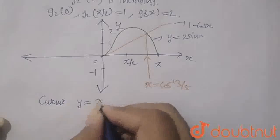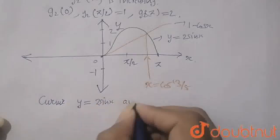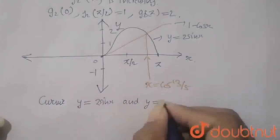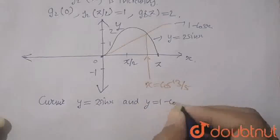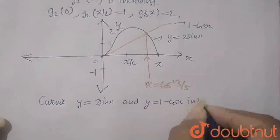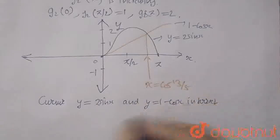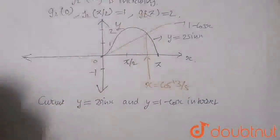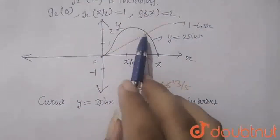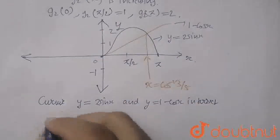The curves y equals to 2sinx and y equals to 1 minus cosx intersect. They are intersecting at this point.